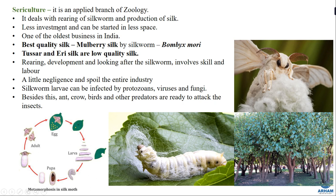Next is sericulture, an applied branch of zoology dealing with rearing of silkworms and production of silk. Like other farming, sericulture involves skill and scientific knowledge for rearing and development. It requires less investment and can be started in small space. It is one of the oldest industries in India with large numbers of families associated with it. The best quality silk is mulberry silk, produced by the silkworm Bombyx mori. Tasar silk and eri silk are lower quality varieties. The quality and quantity of silk depends on the quality of mulberry leaves on which the larva feeds.